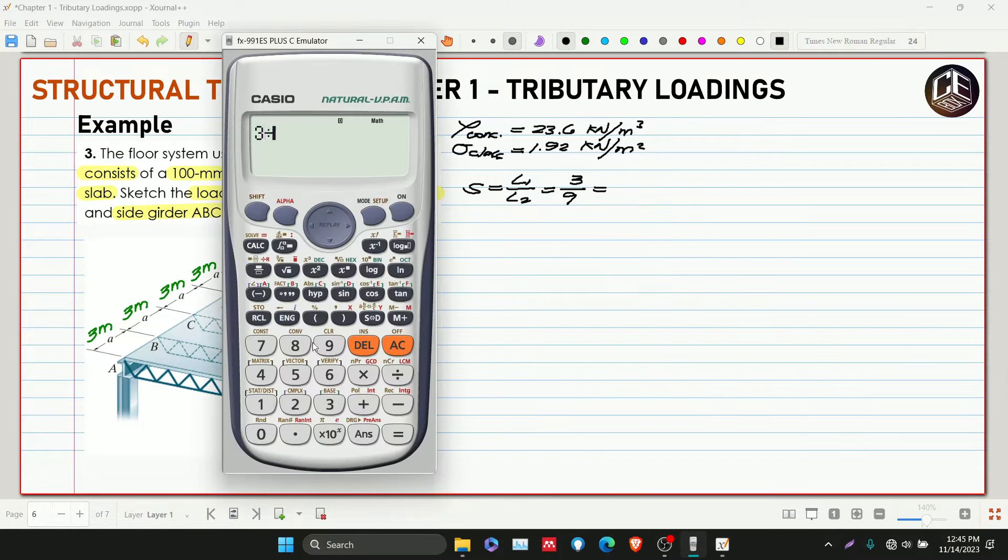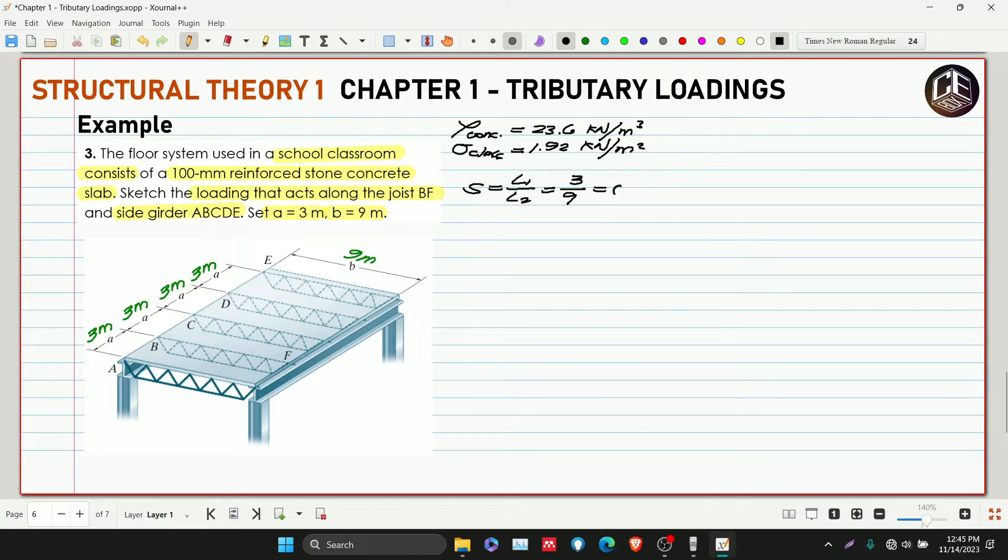This is less than 0.50, therefore our floor system is one-way slab.